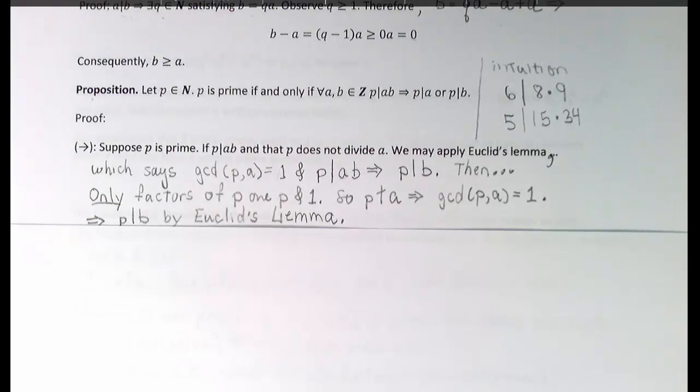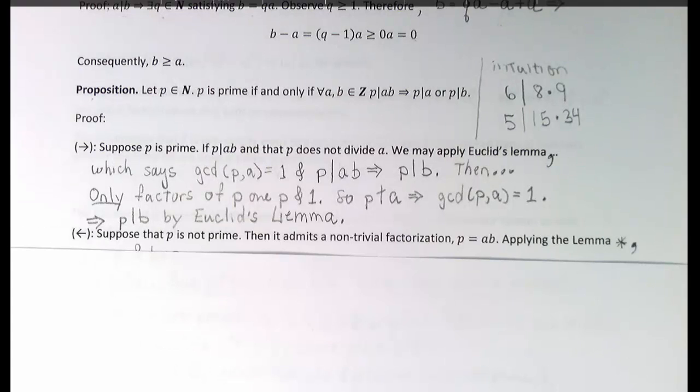One direction of this proof is essentially a restatement of Euclid's lemma. If p divides a·b, then either p divides a, or it does not. If p does not divide a, since p is prime, the GCD of p and a has to be 1. But then, by Euclid's lemma, p would have to divide b. Now for the other direction.